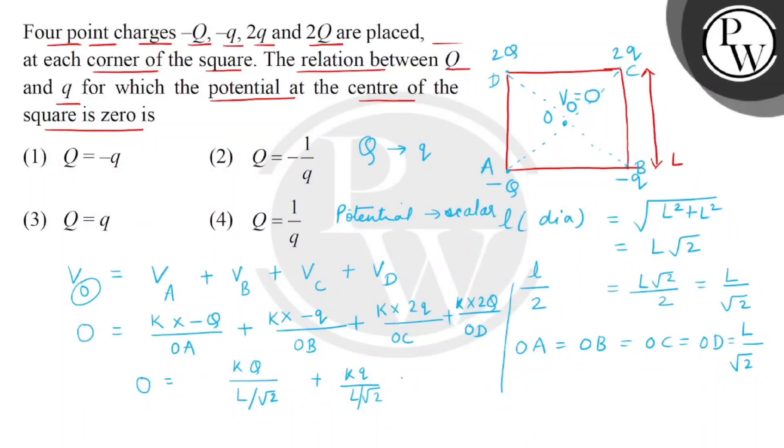If we transpose this, we will have a relationship Q equals minus q. So, we may have correct answer as option number one.